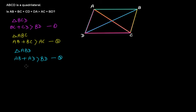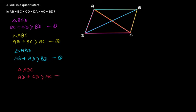From triangle ADC, AD plus CD will be greater than AC. This is the fourth inequality.